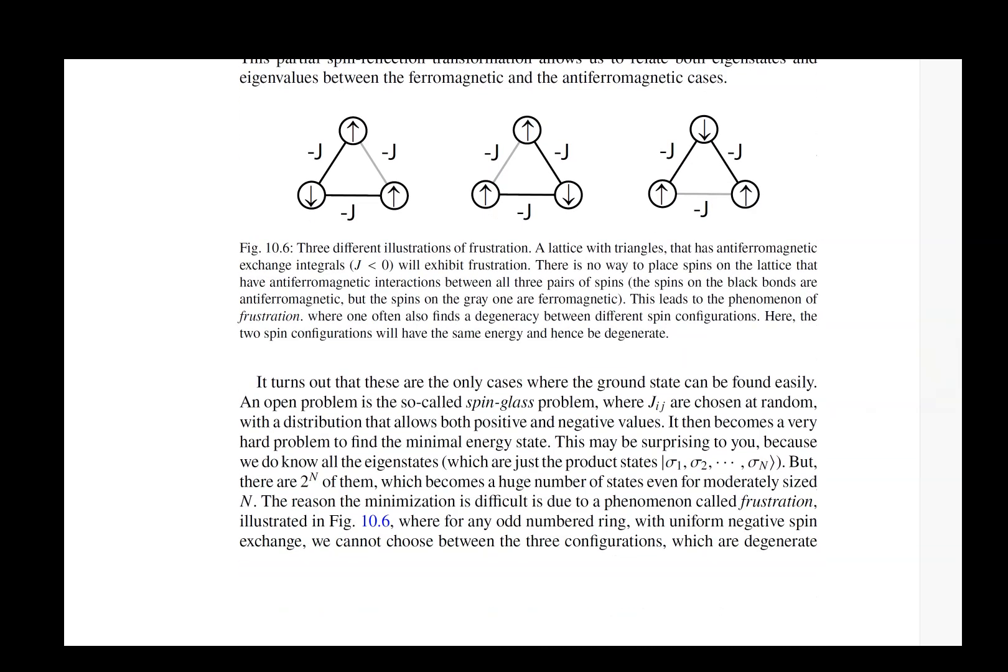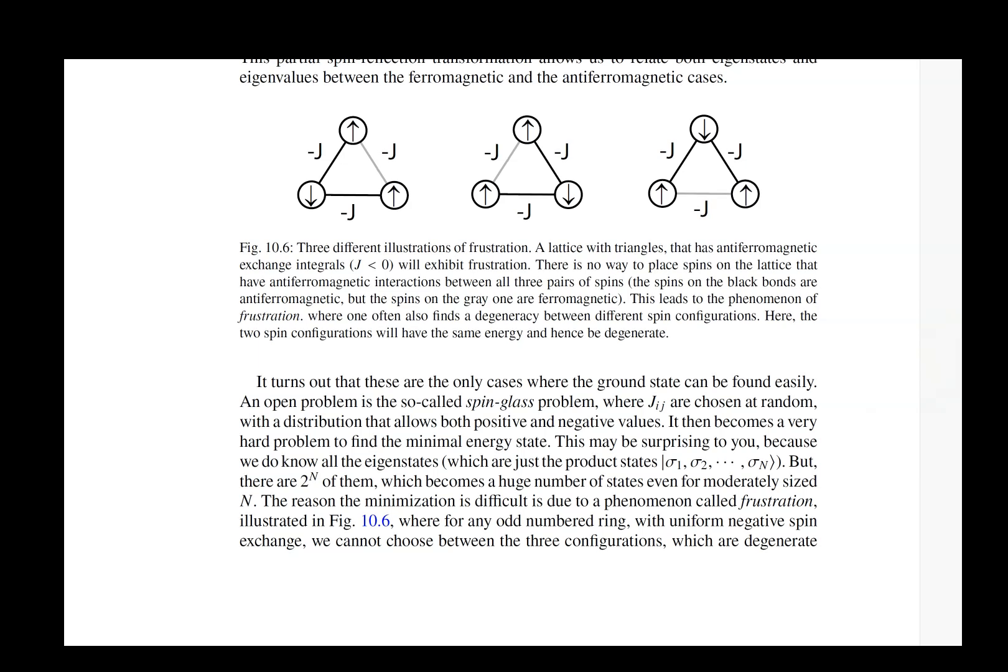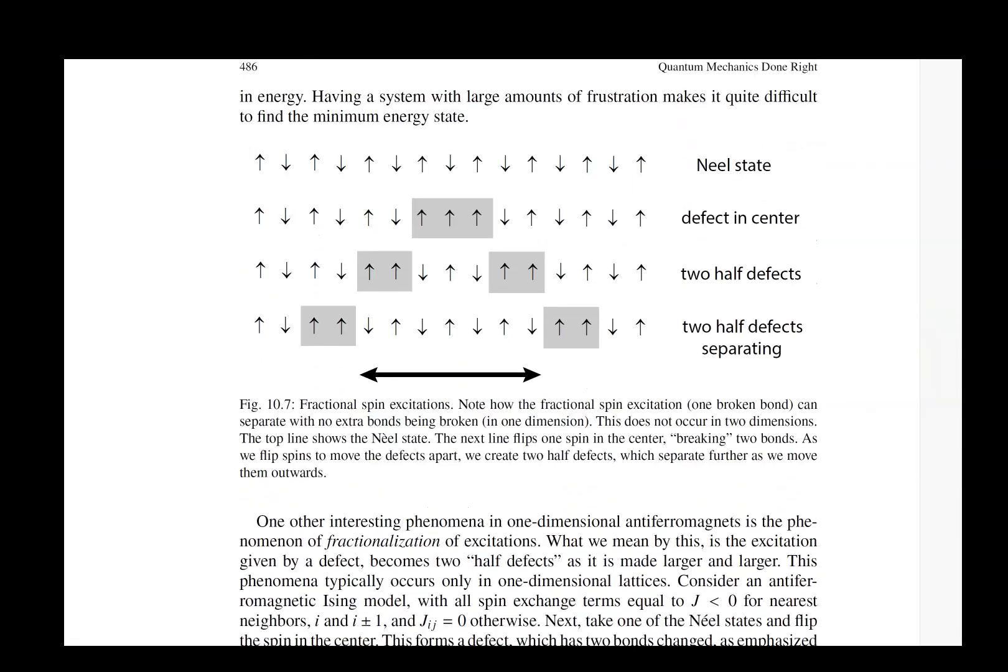Here we're looking at the property of frustration when you have antiferromagnetic interactions. So the spins want to be aligned oppositely, but you have triangular connections on your lattice. You cannot have the three spins all opposite to each other in pairs. Because of that, you get a degeneracy where these three different configurations will all share the same energy. There's lots of interesting quantum mechanics that occurs when you have these degenerate states, especially when you add small perturbations that will break the degeneracy. Exactly how the system responds to those small perturbations is a very interesting problem that lots of people are interested in studying.